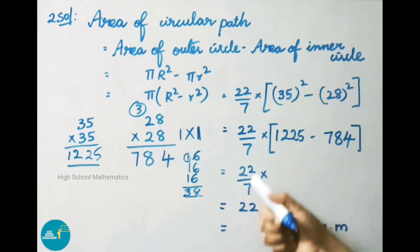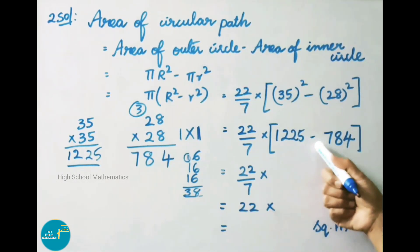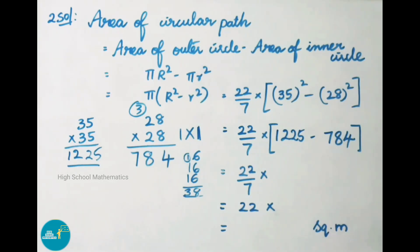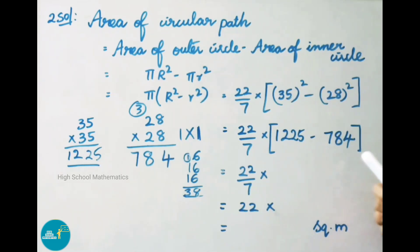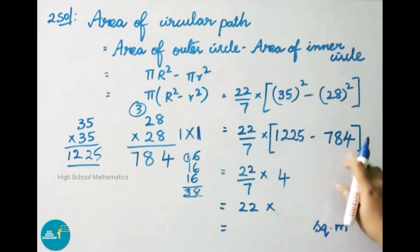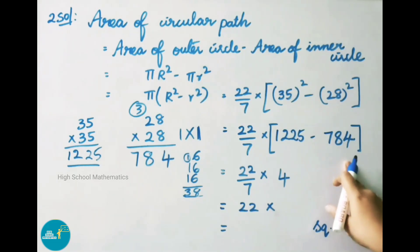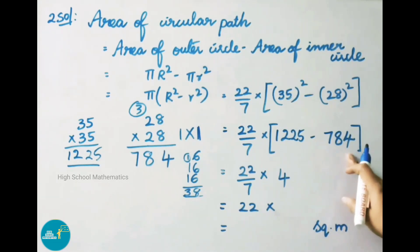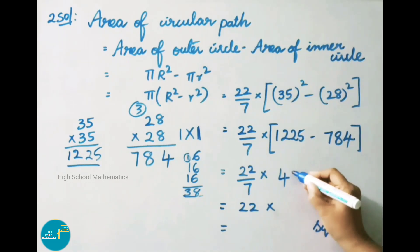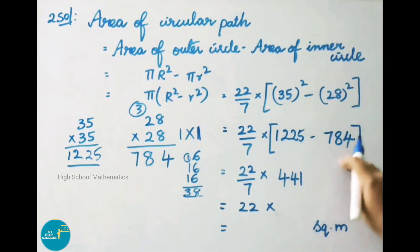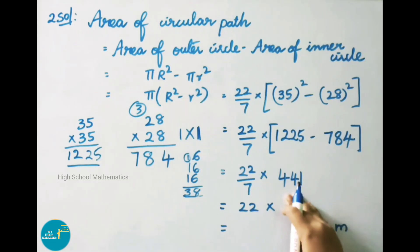To subtract 1225 − 784: round 784 to 800. 1225 − 800: take 1200 − 800 = 400. Then 800 − 784 = 16, add 16 to the remaining 25 to get 41. So 400 + 41 = 441. Therefore 22/7 into 441.